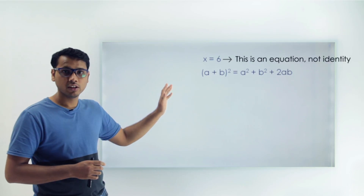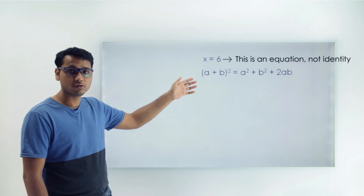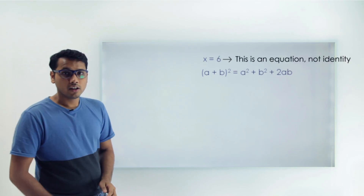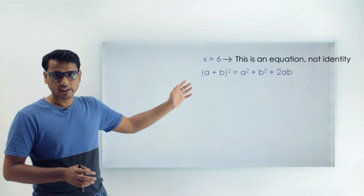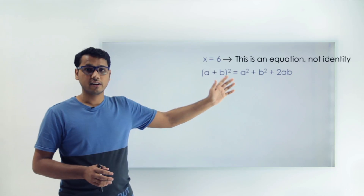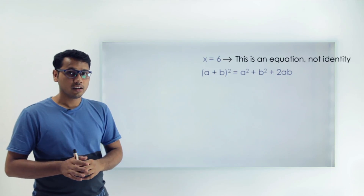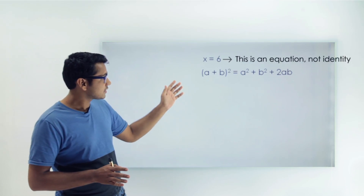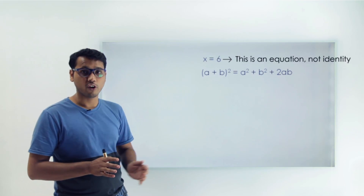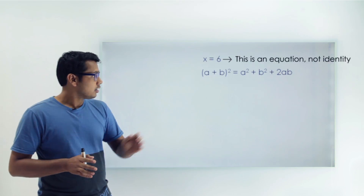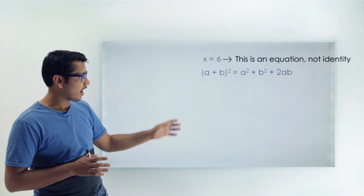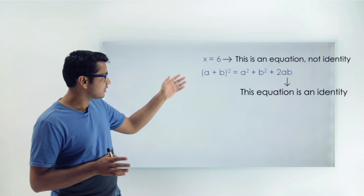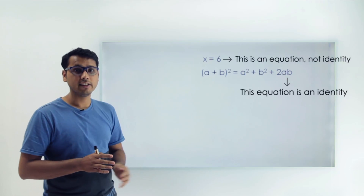Consider one more equation which you have used in your previous classes. It is (a + b) whole square equals to a square plus b square plus 2ab. Now try putting different values on the left-hand side and right-hand side. You will find out that no matter what values you are putting in, this equation is true for every value. Irrespective of the values of a and b, this equation is true for all values, so we say it is an identity.